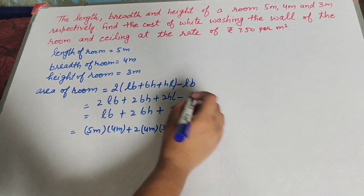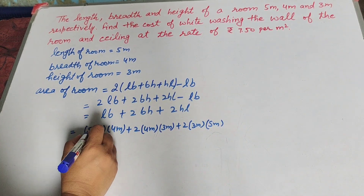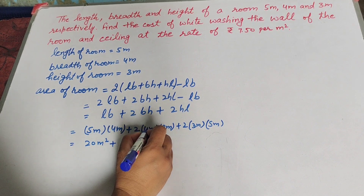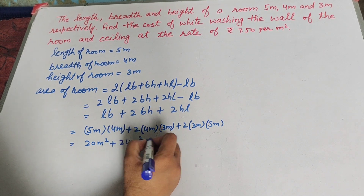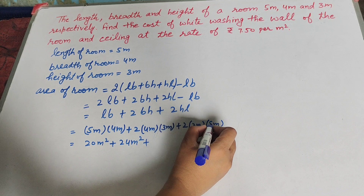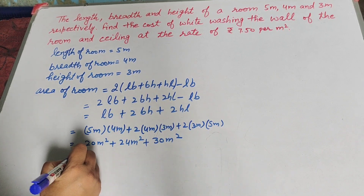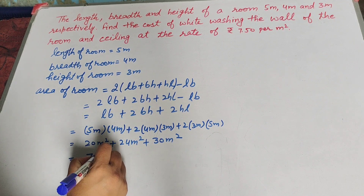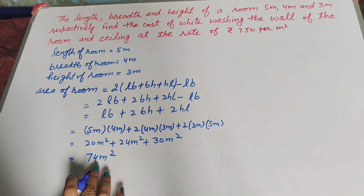Substituting the values: L=5m, B=4m, H=3m. LB = 5×4 = 20 meter square. 2BH = 2×4×3 = 24 meter square. 2HL = 2×3×5 = 30 meter square. Adding them: 20 + 24 + 30 = 74 meter square. So the area of the room that is whitewashed — the 4 walls and ceiling — is equal to 74 meter square.